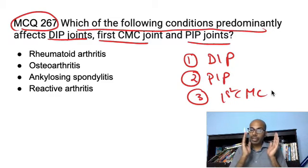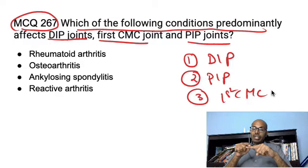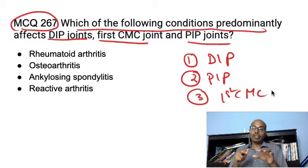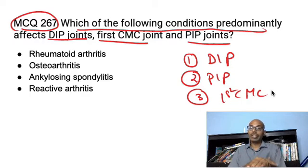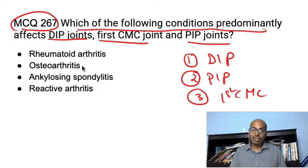You must remember clearly the difference between rheumatoid arthritis pattern and osteoarthritis pattern. In osteoarthritis, it is the distal joints which are involved — DIP, PIP, and the first CMC — and the wrist, elbow, and ankle are not involved. In rheumatoid arthritis, the more proximal joints are involved: MCP joint, wrist, and elbow. So the answer where DIP and PIP joint along with the first CMC joint are involved is osteoarthritis.